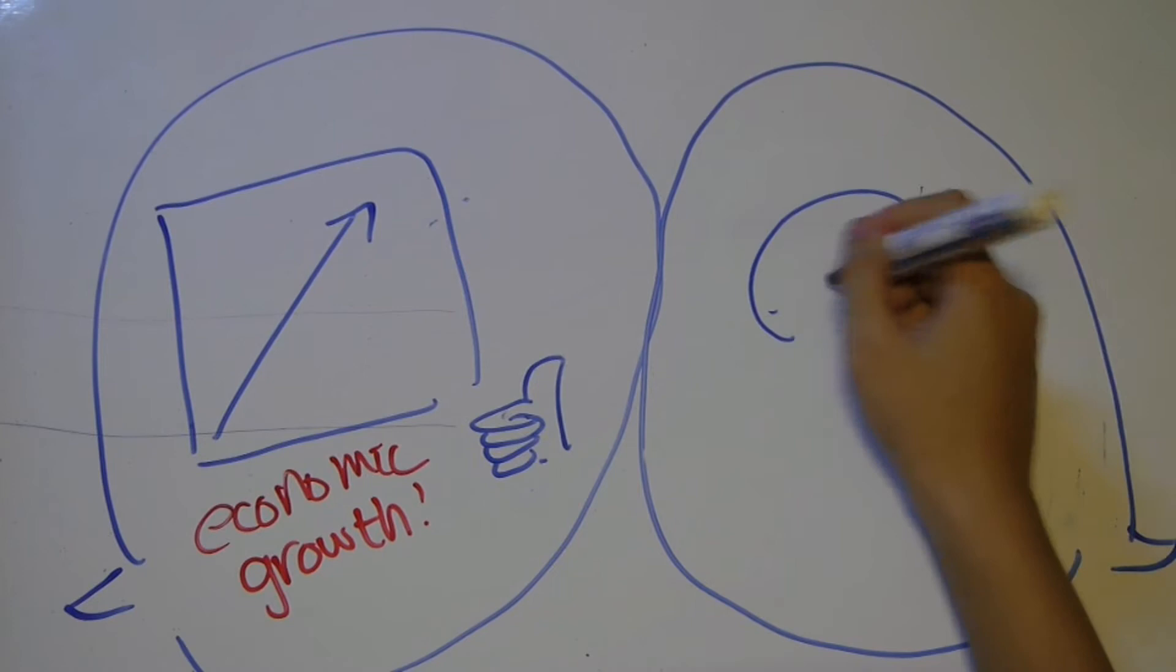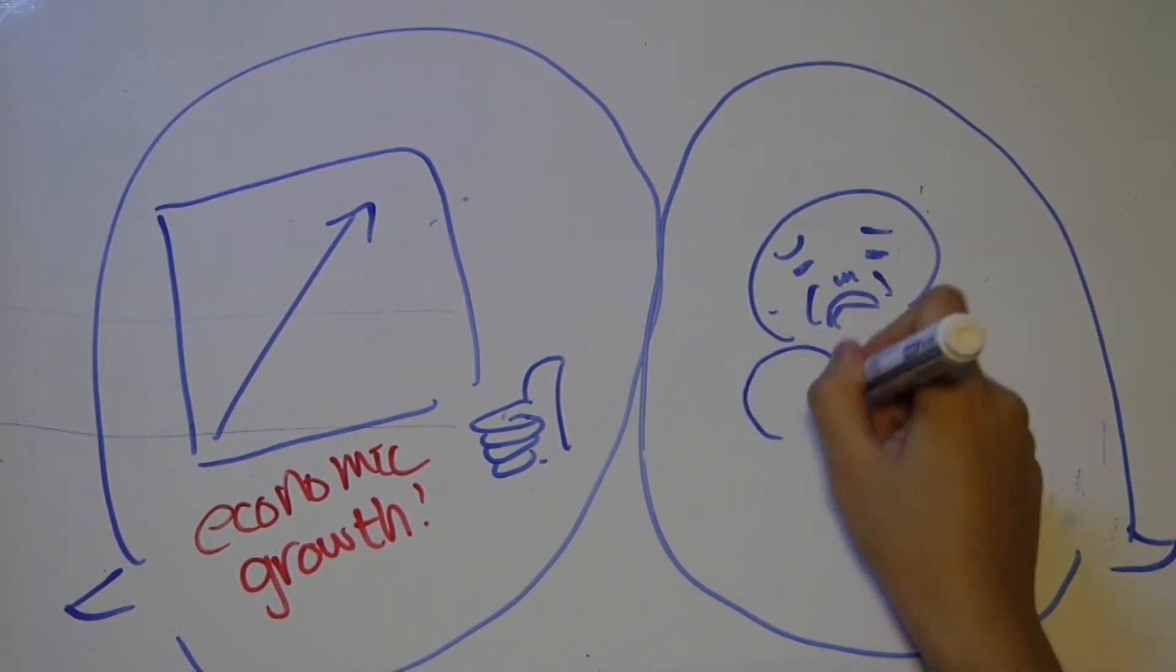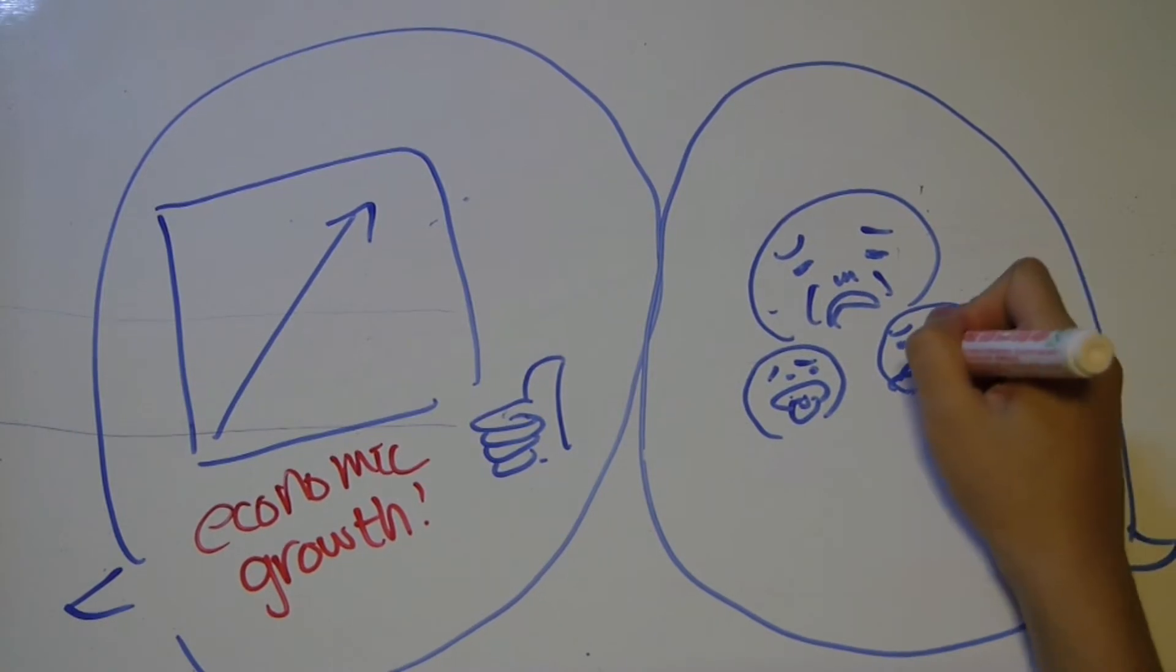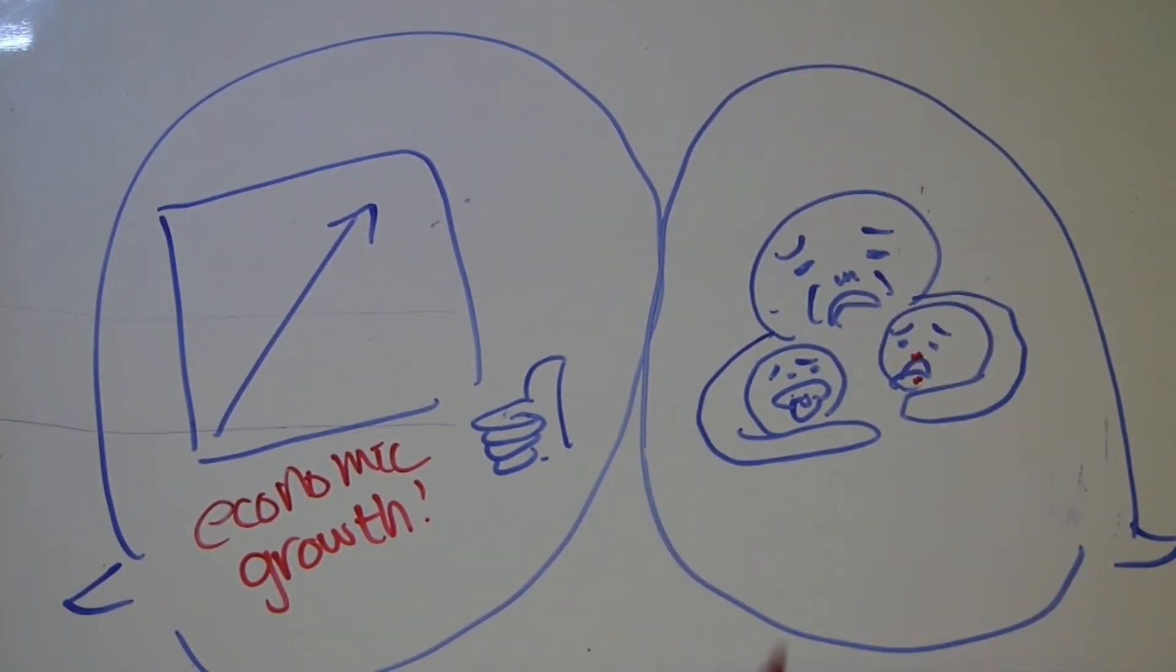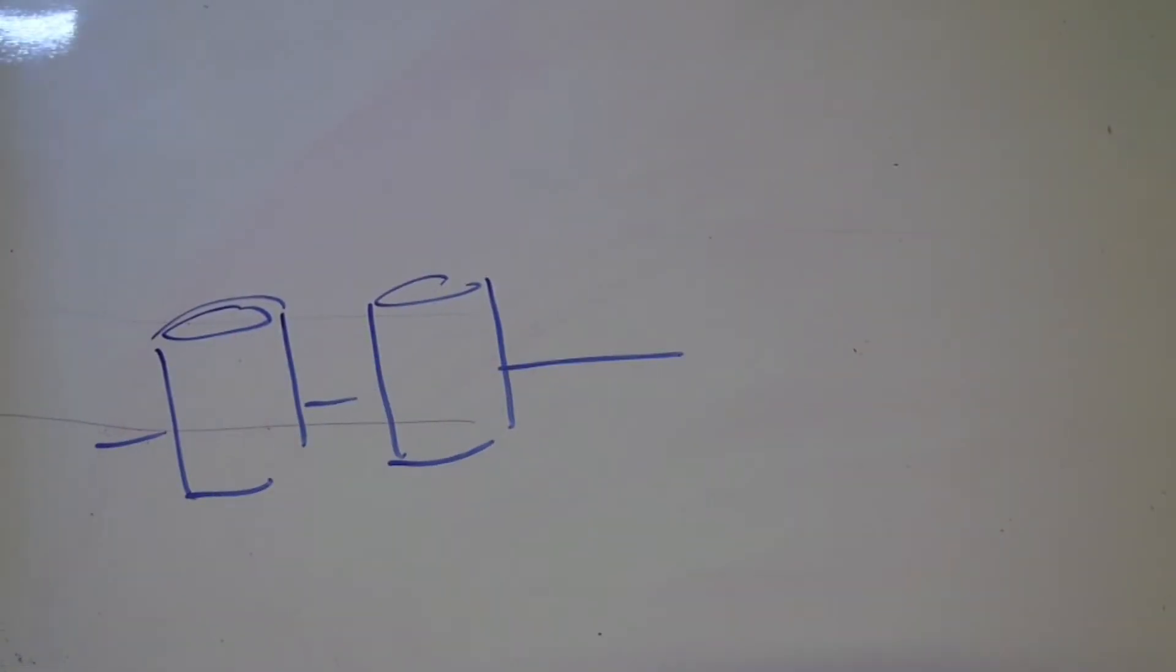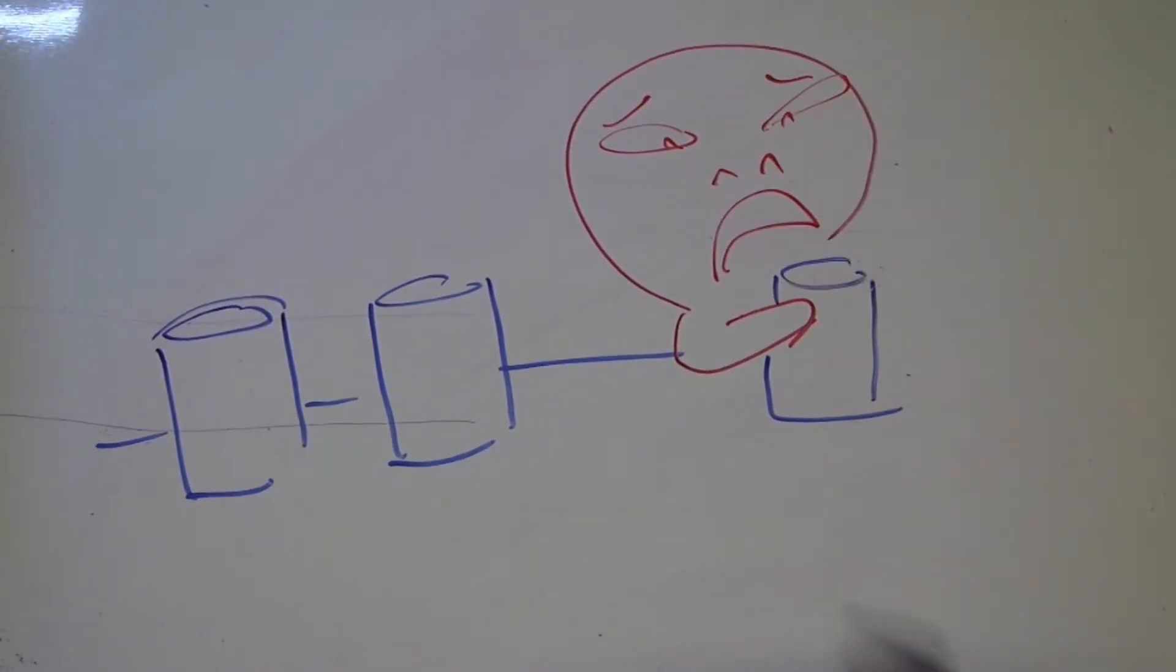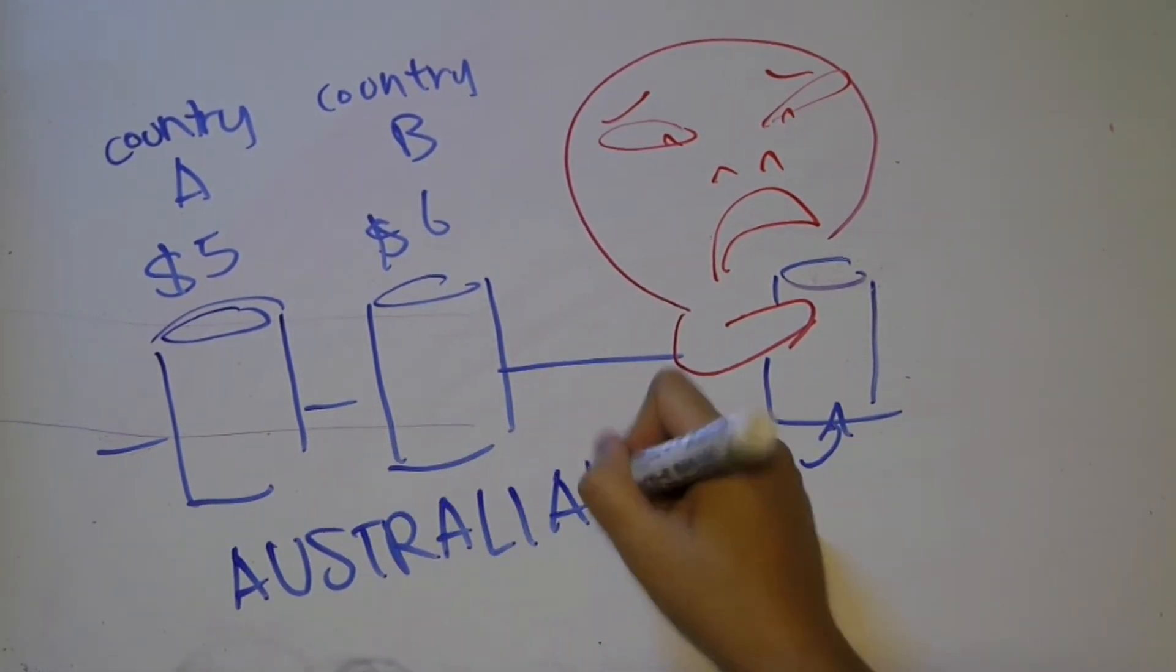However, some critics say that the carbon tax is contributing to the record number of firms going bankrupt with thousands of employees being laid off. While the carbon tax adds around 10% to the price of electricity for most families, the impact on many small businesses and energy-intensive firms can be significantly higher. Australia's largest manufacturing firms ask the government to get rid of the nation's carbon tax as it disadvantages local companies that are attempting to compete on the global market.